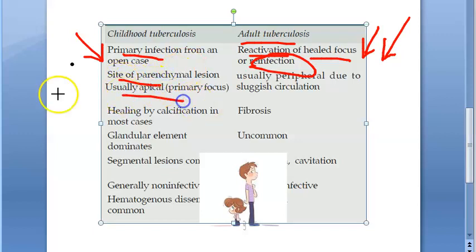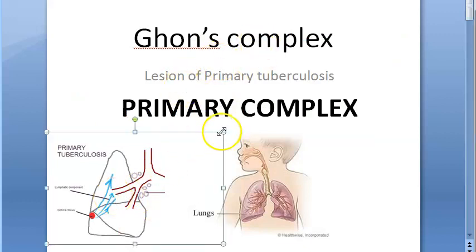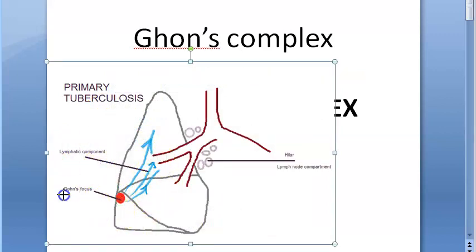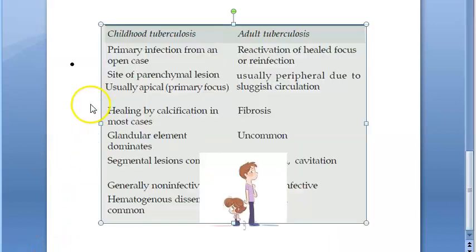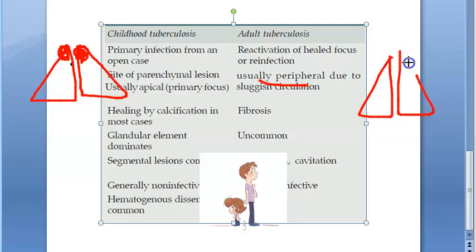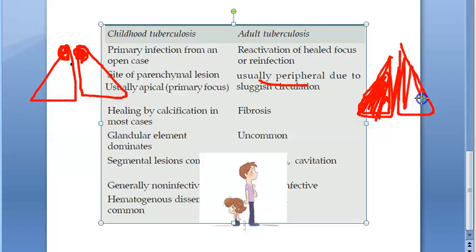The site of infection in children is usually apical — the apex of the lung. In our Ghon's complex video, we have already seen this primary complex. So the primary focus is apical — that will be the area of primary focus. In adults, it will be peripheral due to sluggish circulation — anything external becomes the periphery.